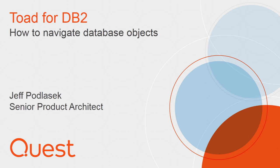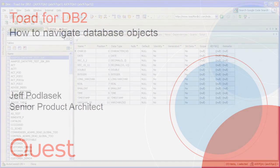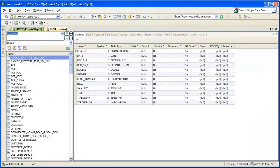Hi, this is Jeff Podlasik with Toad DB2 Development. I'm going to demonstrate the changes we made to our database explorer in creating some new object groups. I've got Toad up and running, and I've got a couple connections going — one to a DB2 LUW database, and one to a ZOS subsystem.